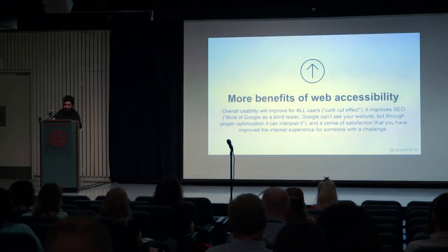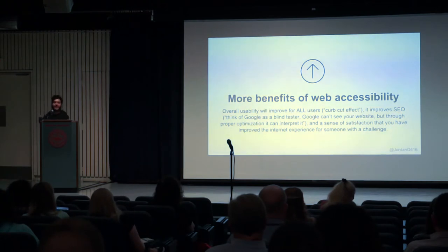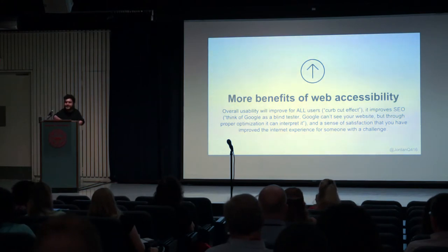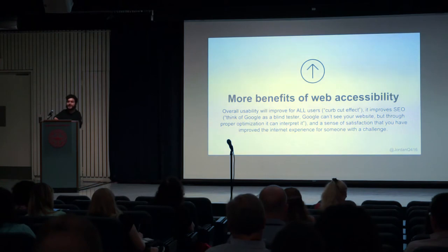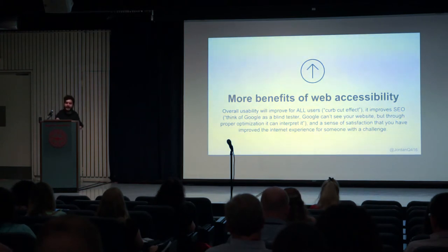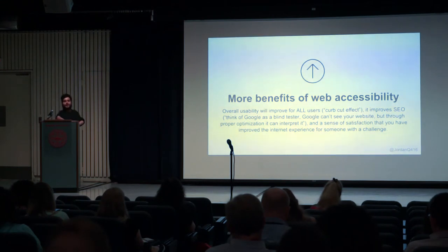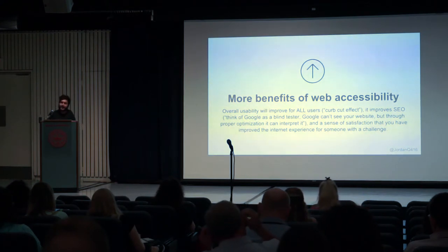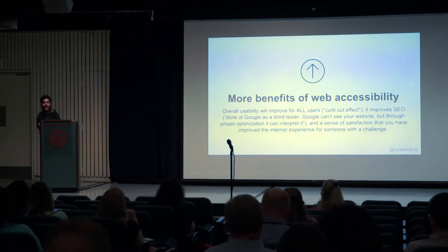Some more benefits: overall usability is improved for all users. This is called the curb cut effect. Everyone knows that at the edges of sidewalks they dip down so that it's parallel to the level of the street — that's a curb cut. Initially that was implemented for people in wheelchairs so that they can get up and down onto the sidewalk from the street at crosswalks. Nowadays everybody's benefited from it — people carrying luggage, baby carriages — anyone and everyone has benefited from this initial accessibility requirement. So that's the curb cut effect: most of the time when you implement something specifically for accessibility, everyone benefits. Everybody wins.